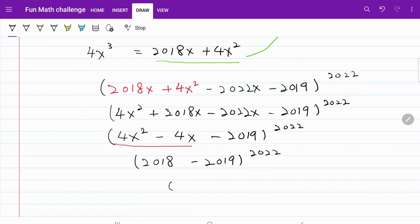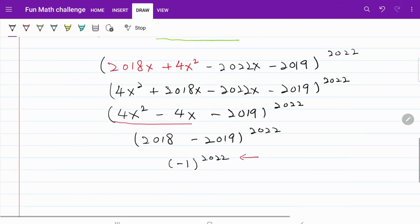What's inside the bracket will become minus 1 to the power of 2022, and since 2022 is an even number, so negative 1 raised to an even number exponent is equal to 1. And that's the answer to today's question.